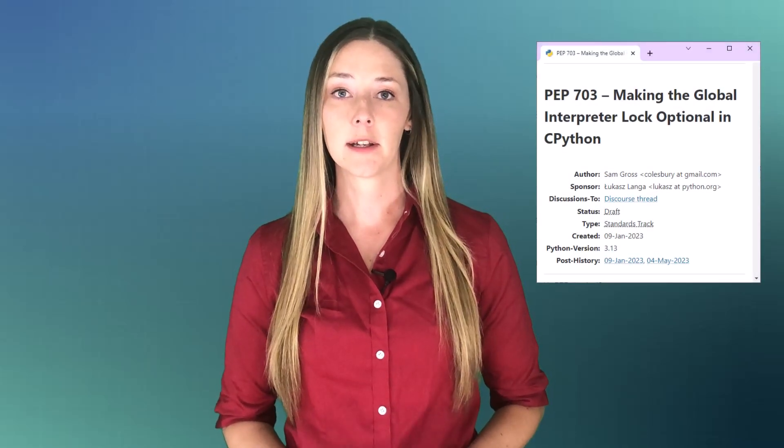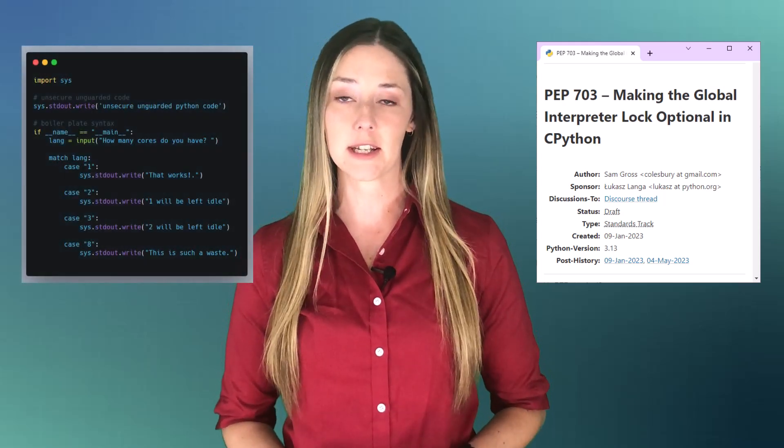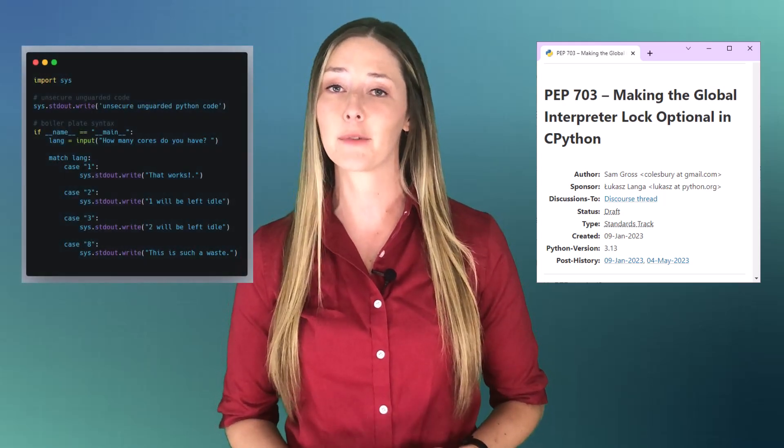There's talk that Python itself might remove the GIL. PEP 703 puts the GIL on the chopping block. But it took Python 30 years to get a switch statement, so don't hold your breath over PEP 703.